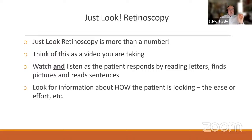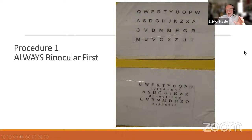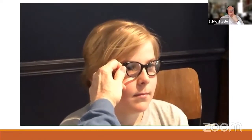Think of Just Look Retinoscopy not as a number but as a video you're taking — watch and listen as the patient responds. Look for information on how the patient is looking and the ease and effort involved. I always start binocular. I use different targets for older kids and younger kids who know their letters, including uppercase and lowercase, which create different accommodative demands. Compare left and right eye — you may see initial differences that come into balance with equal lenses, so don't immediately jump to conclusions about anisometropia.